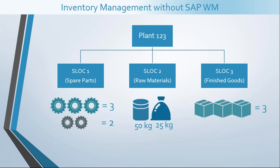When we do not have SAP WM, we can check how much stock of a particular material exists under one plant, and the smallest level we can drill down to is a storage location. So in this example, I can check how many spare parts I have in storage location one, how much raw material in storage location two, and how many finished goods in storage location three. But we cannot go any further using only inventory management — the lowest possible level for stock management is the storage location.